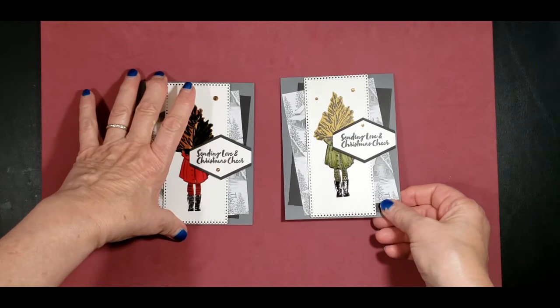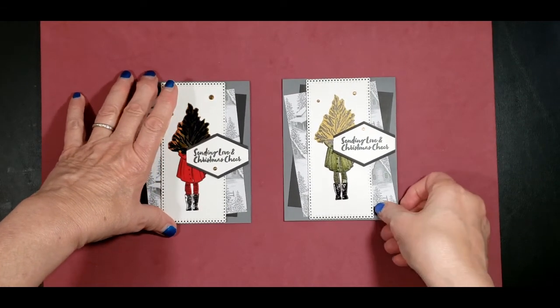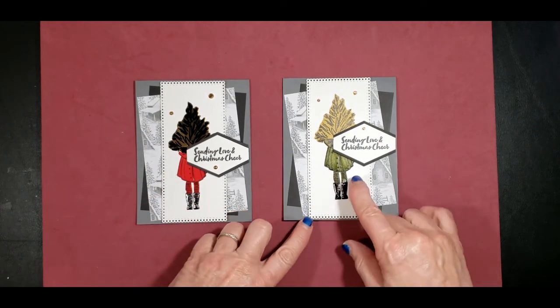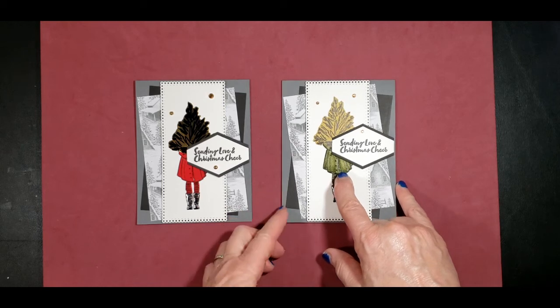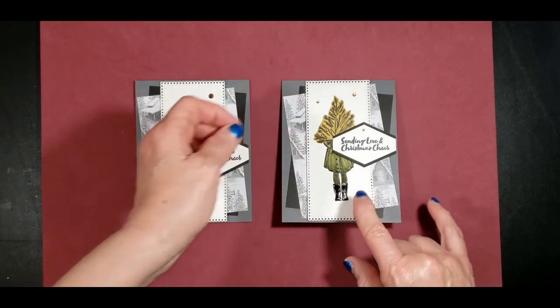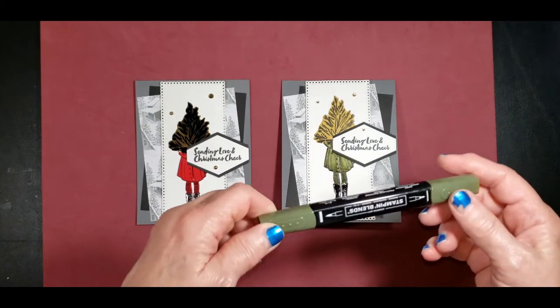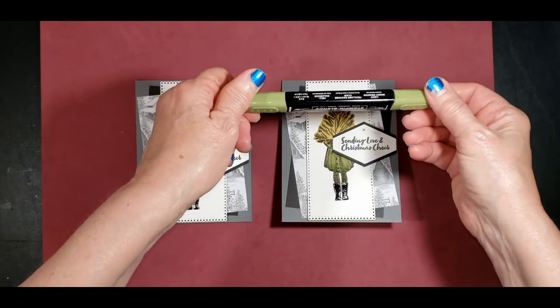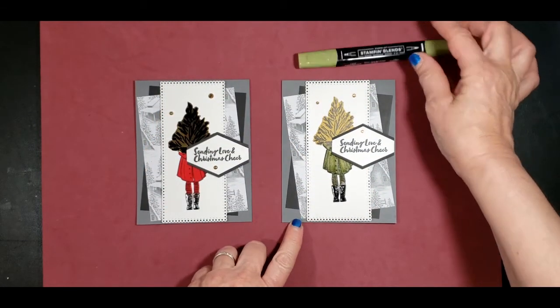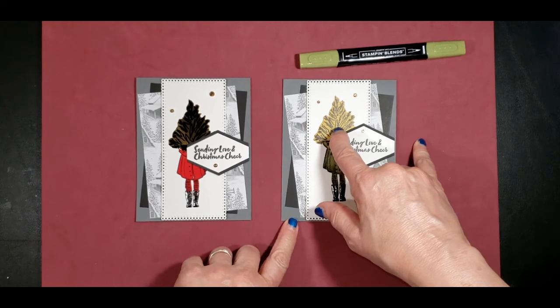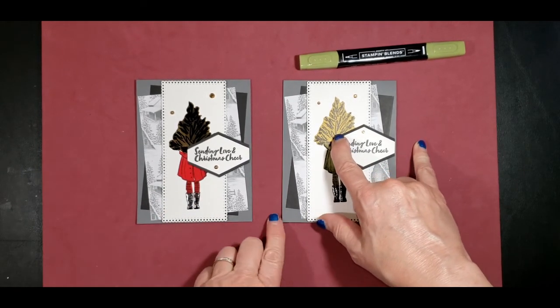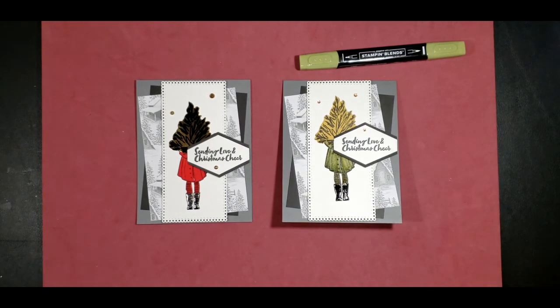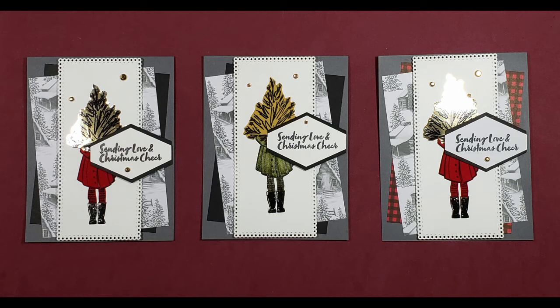So here's our two cards. This one is red velvet, it has the gold foil. And this one is white velvet that I used the mossy meadow, light mossy meadow, to color over. Then we use the champagne gold vellum for the tree up here. So I think they look very nice. I hope you like these projects as much as I do.